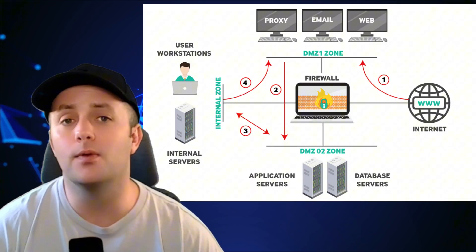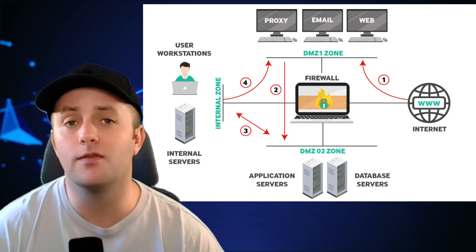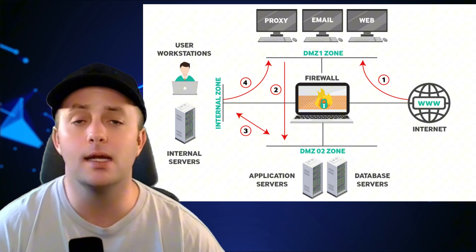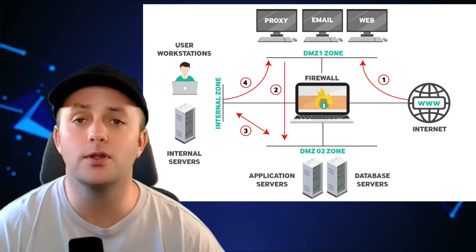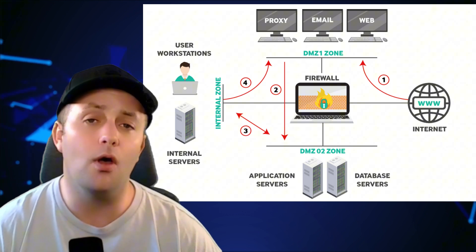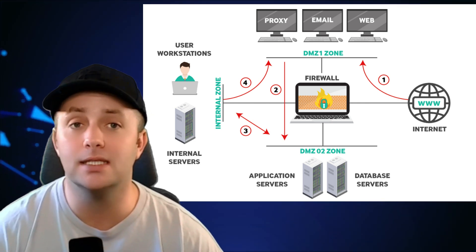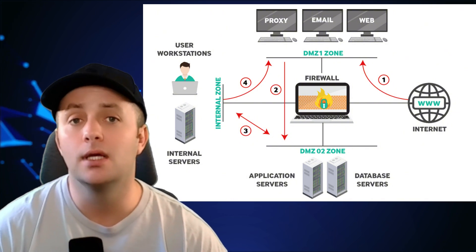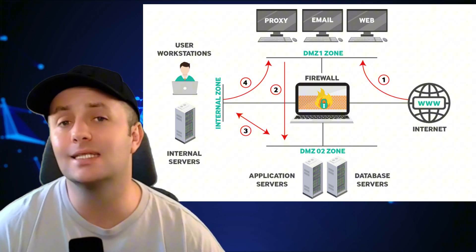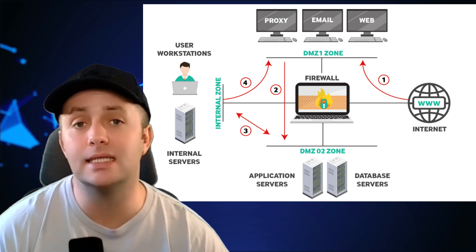Firewalls are not a one-size-fits-all solution and configuring them correctly is key to their effectiveness. One common approach is setting up zones — for example, a trusted zone for devices inside your network and an untrusted zone for traffic coming from the internet. You'll also want to set up a DMZ, or demilitarized zone, for public-facing services like web servers. The firewall can enforce different security policies for each of these zones.